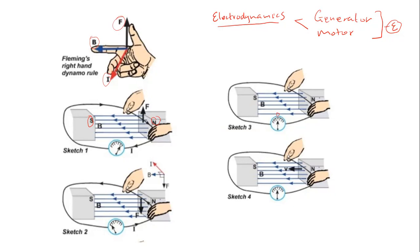Fleming's right-hand rule helps us determine the direction of three parameters: current, magnetic field, and force of the coil. The middle finger represents the direction of current, the index finger represents the direction of the magnetic field, and the thumb represents the direction of the force. By the end of this video, I will teach you how to determine the directions of these three parameters when studying generators and motors.